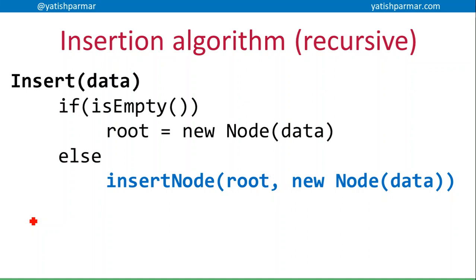There are two parts to this algorithm. The first part is an insert method, which is going to check whether the tree is empty. If the tree is empty, I need to create a new root node to hold that data item. If the root node is not null because there is data in the tree, then I can start kicking off my call to the recursive method, where I pass it the root node and a new node with the data I want to store.